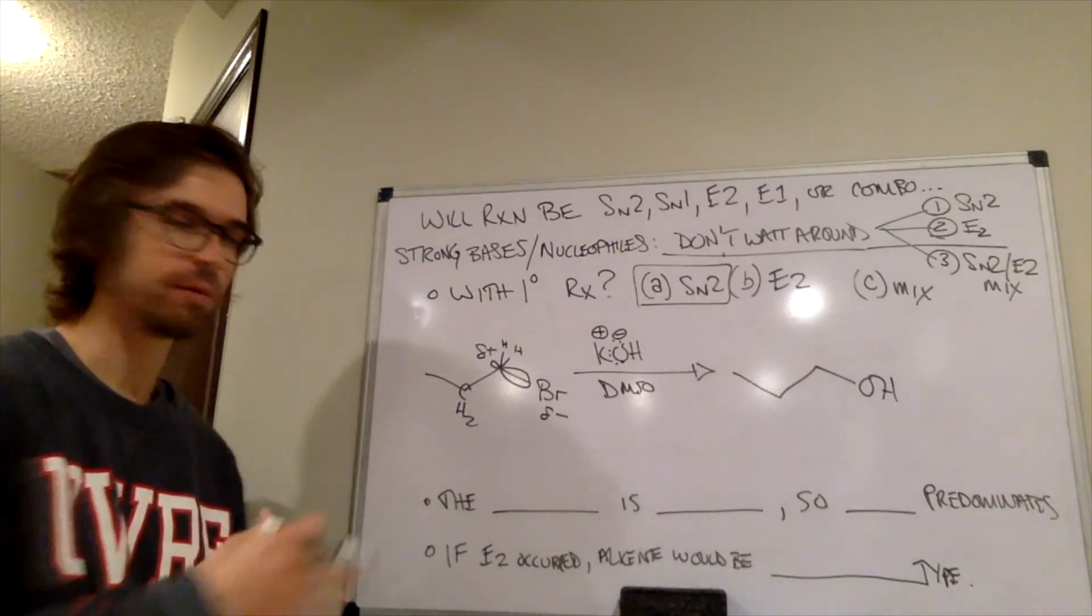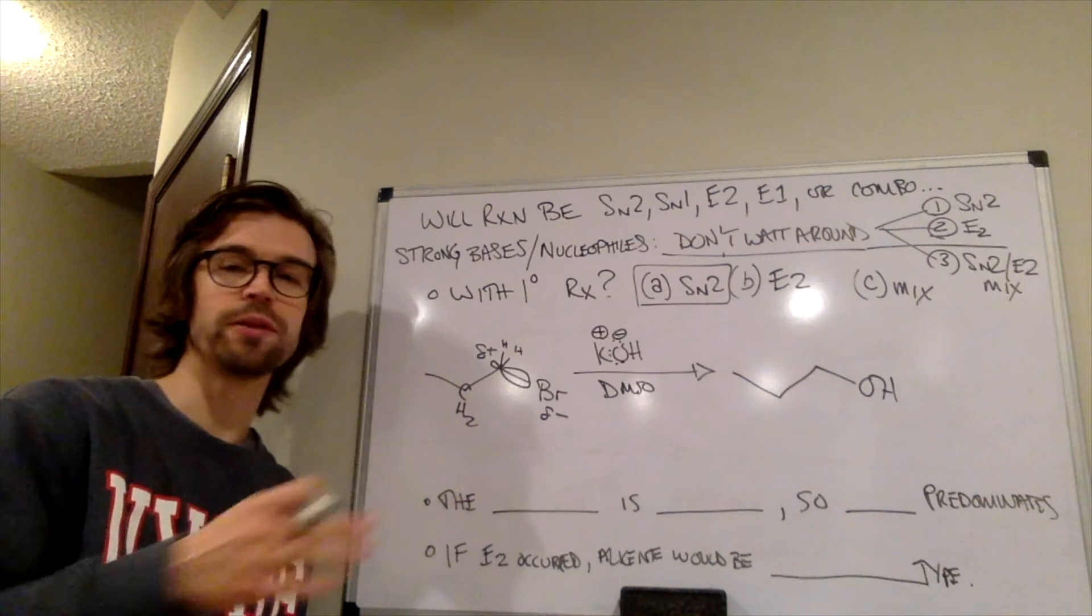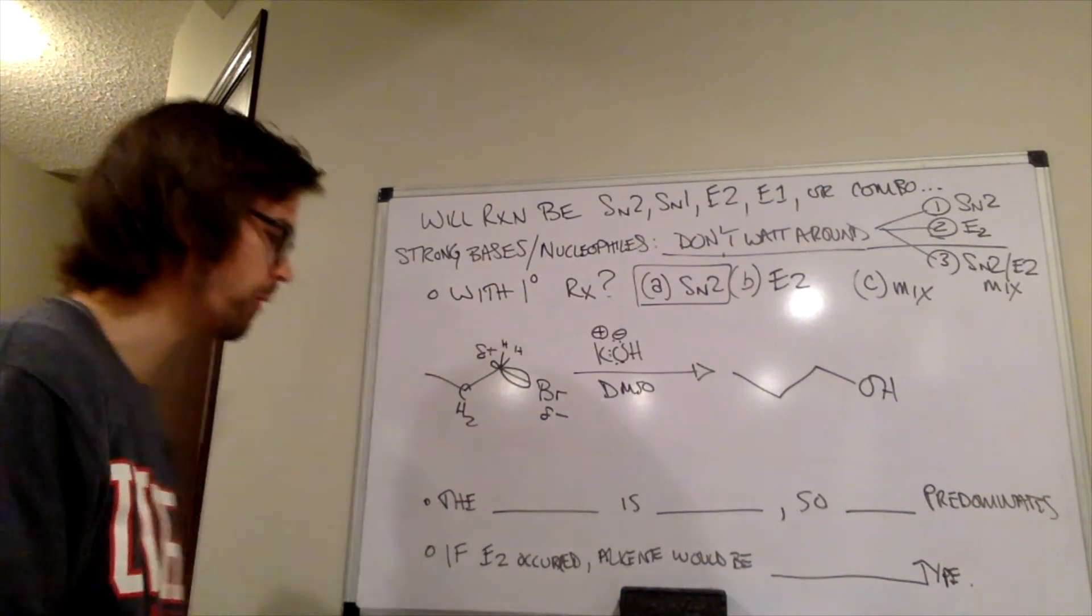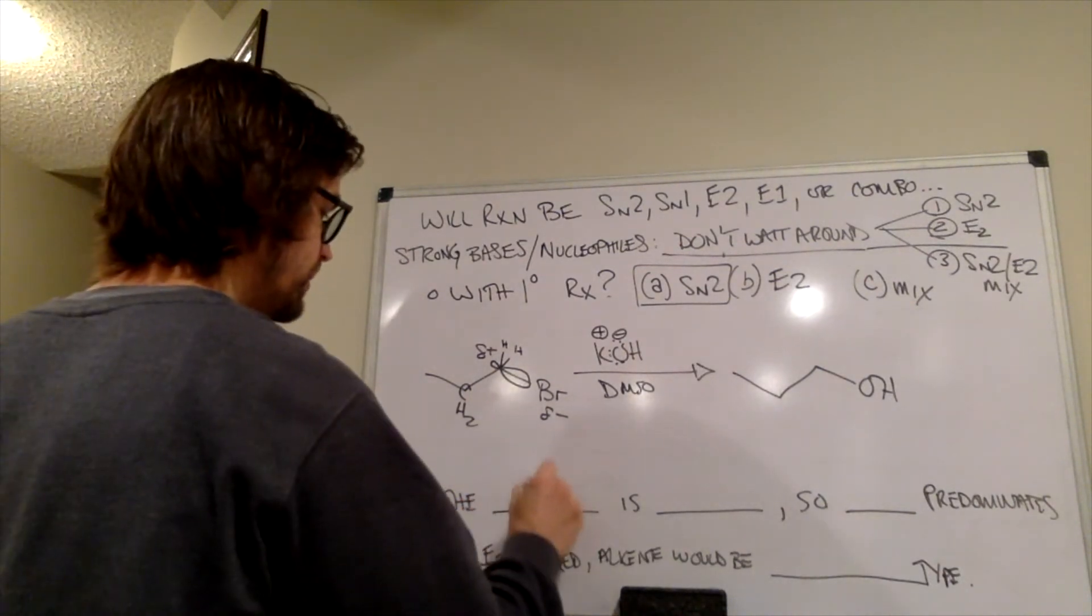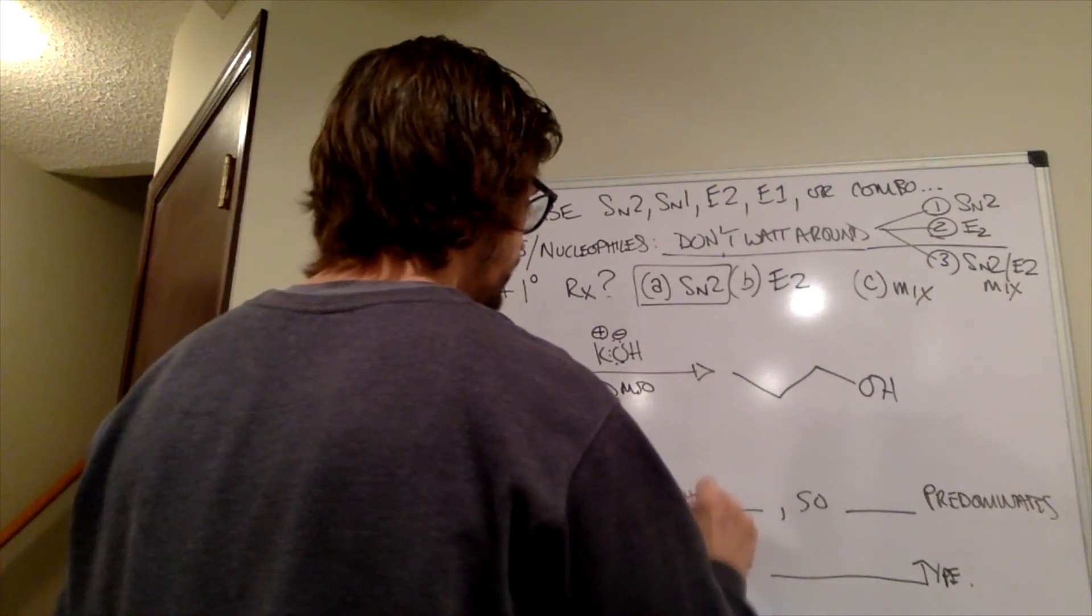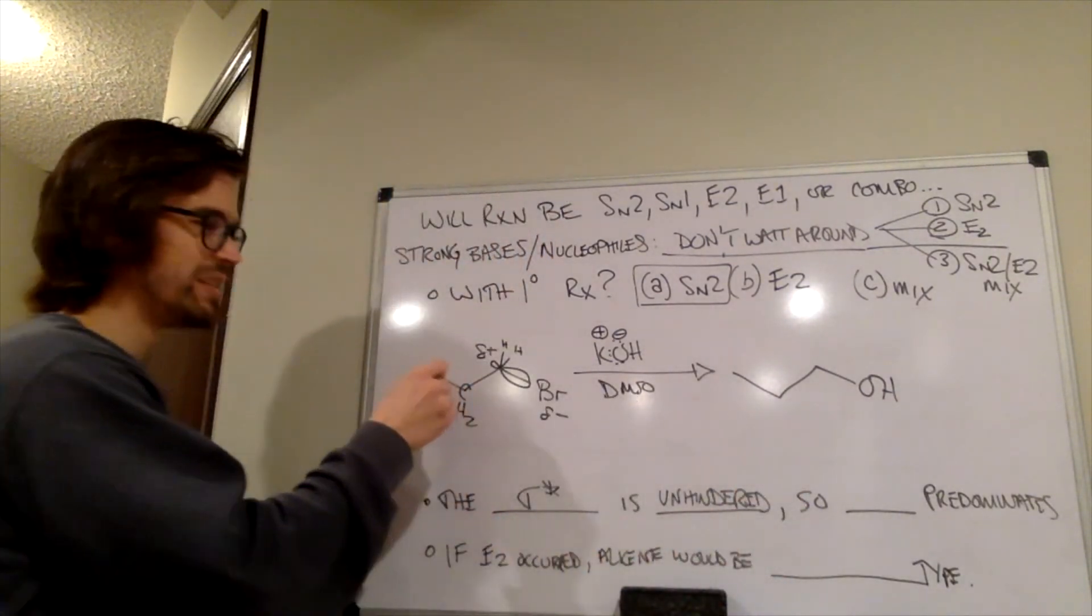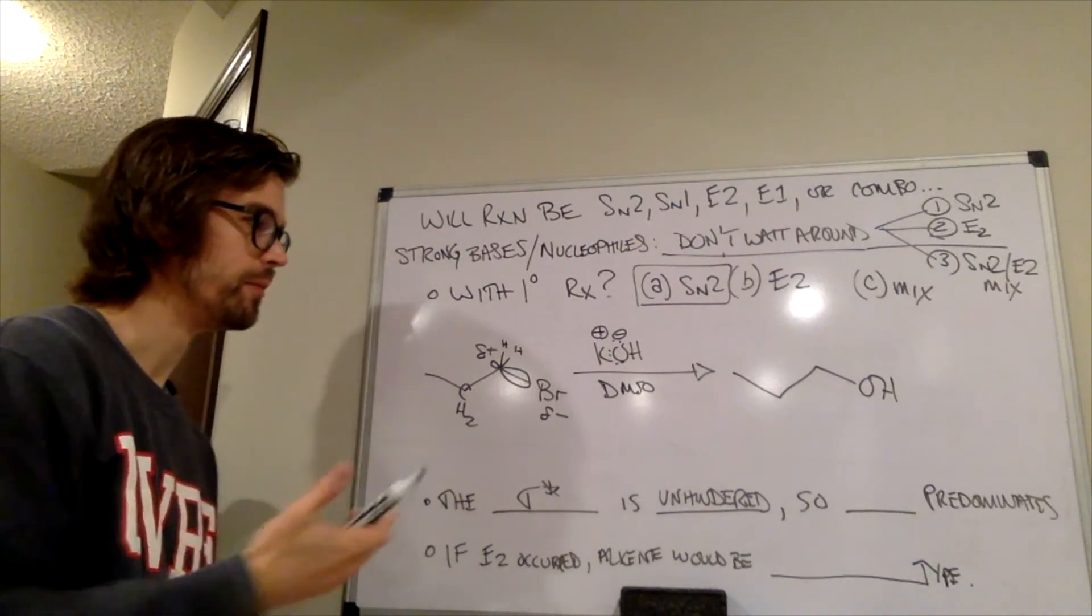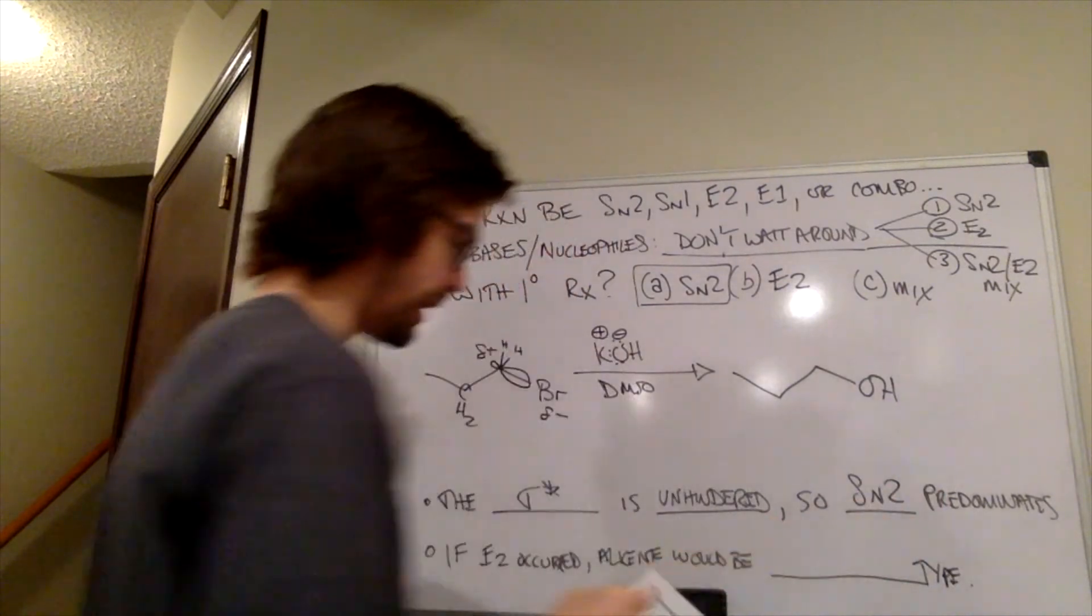So, again, why was that? Maybe you already filled in some of these blanks. Maybe you want to stop for a minute and fill in the blanks yourself so you can really think about it a little bit more. It's always a good thing to think about things a little bit more. But essentially, what I have in these blanks is the sigma star, so the anti-bonding orbital, is unhindered. There's only one CH2 around it. These other things are really small, so the negative charge is pulled there very easily. So SN2 predominates.